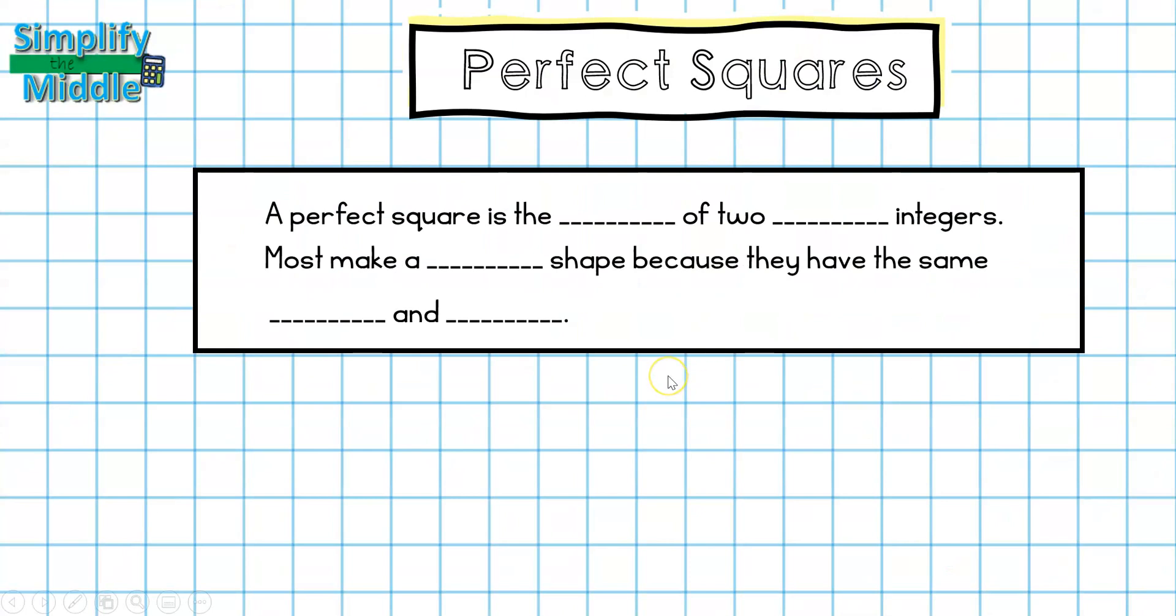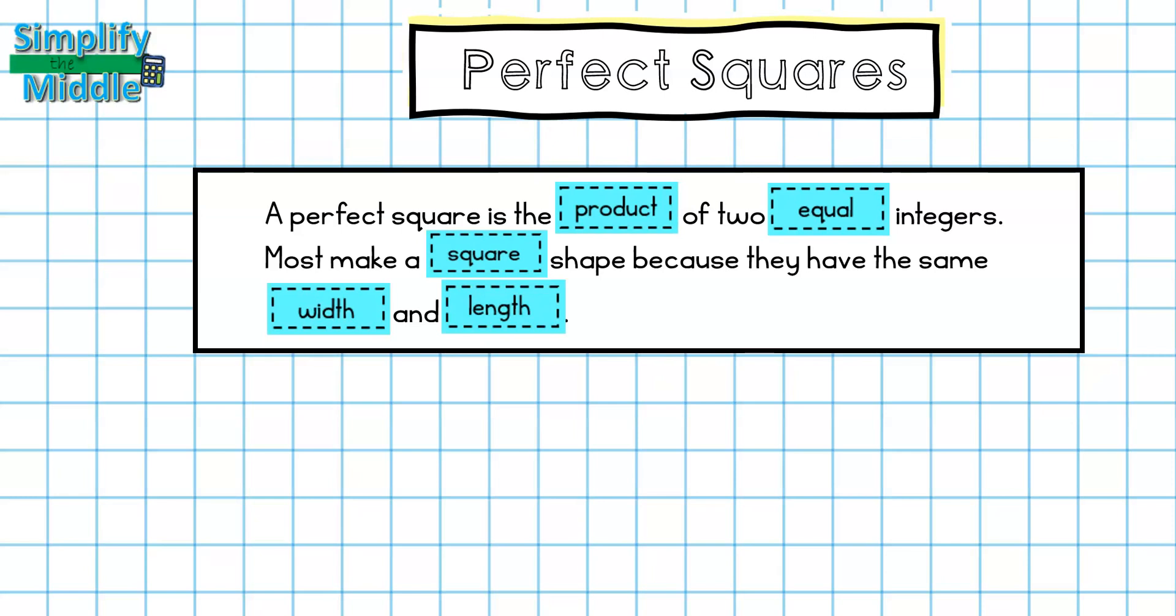Let's recap. A perfect square is the product of two equal integers. Most will make a square shape because they have the same width and length. Notice how we talked about 1, 4, 9, 16, 25, and 36.